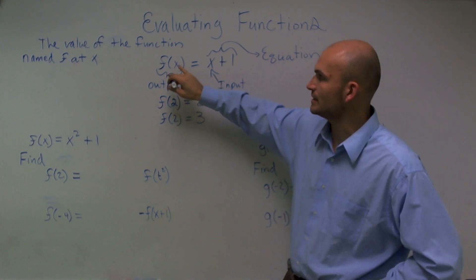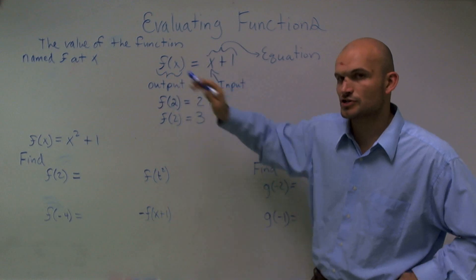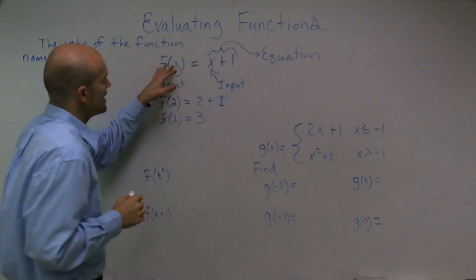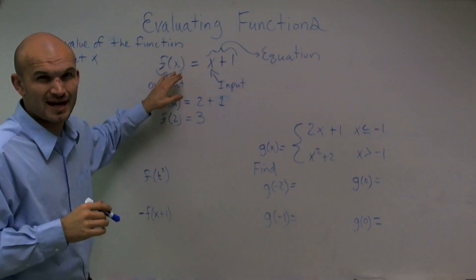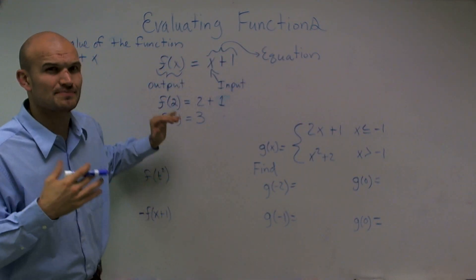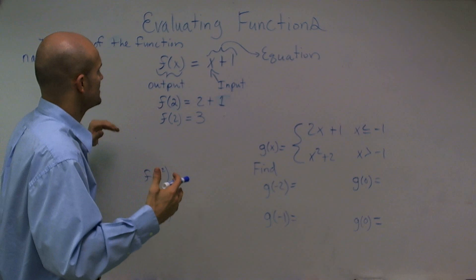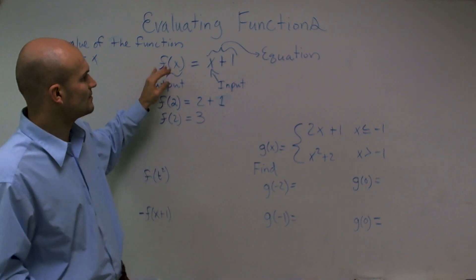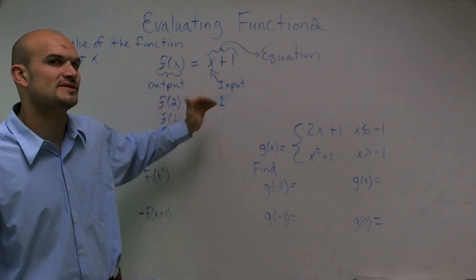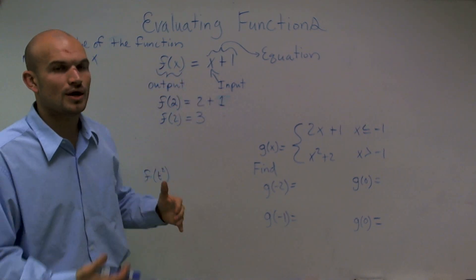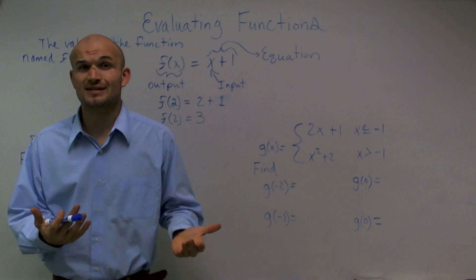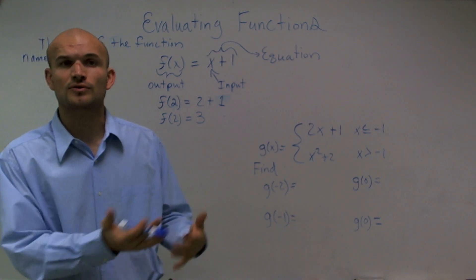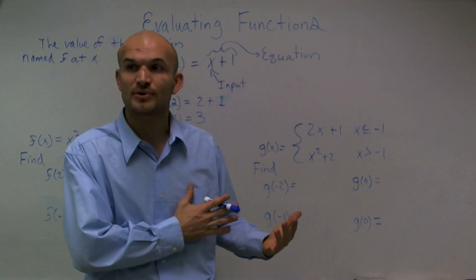When looking at function notation, we have what we call f of x. A lot of students get mixed up with this because they don't really understand what does f of x mean — why can't we go back to using a y? Well, a y and an f of x are really exactly the same thing. They both represent the output value.